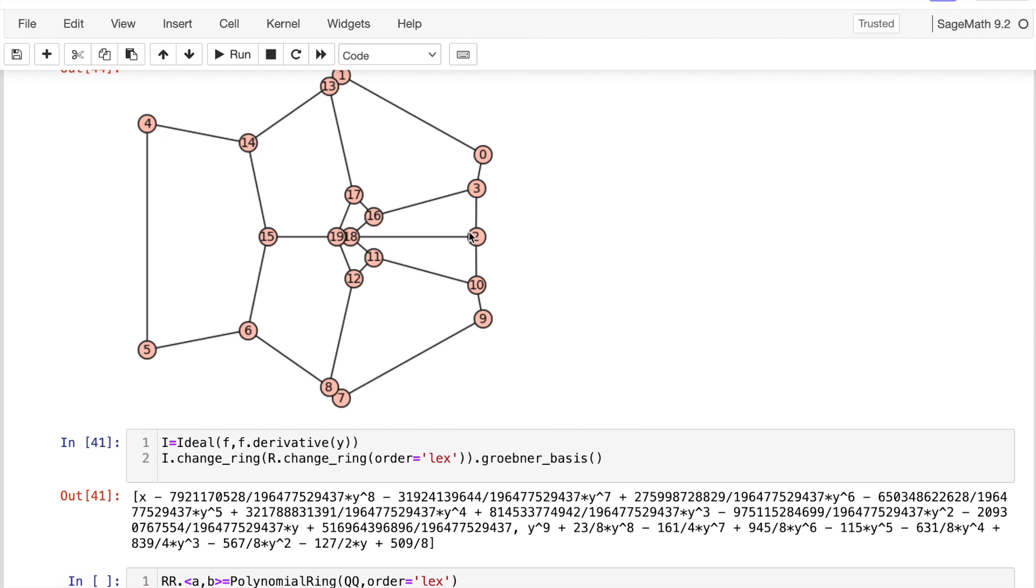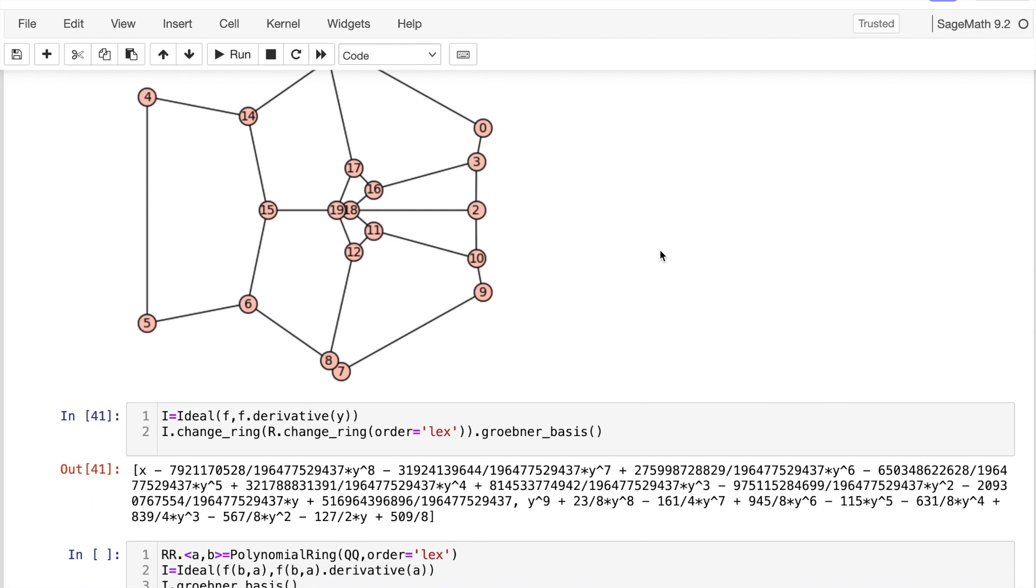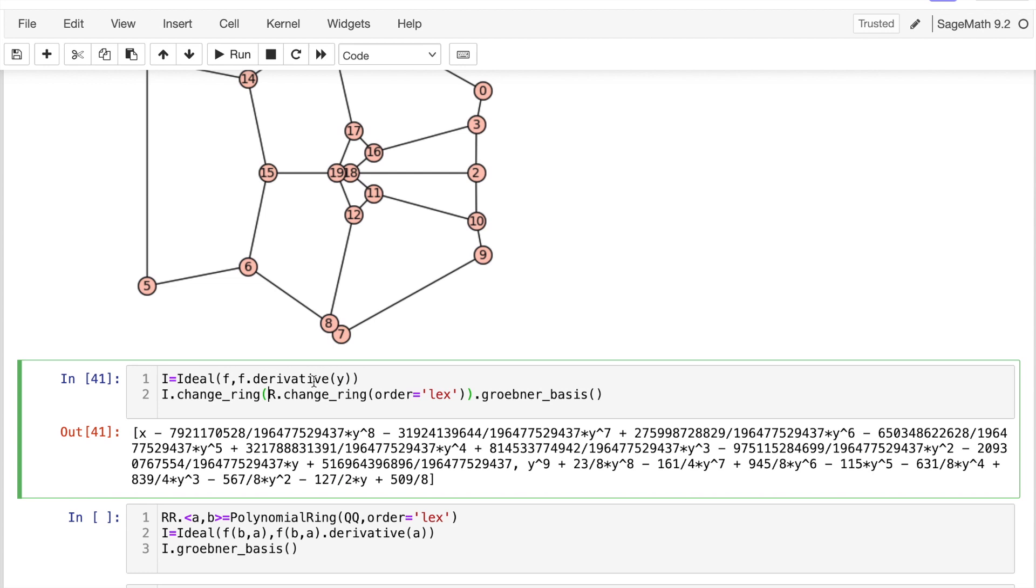What I want to show you here is that we indeed have nine ramification points. So that we can check with what we have done. For example, I construct this ideal with f and the derivative of f with respect to y. I change to lex ordering. And here, the lexicographic Gröbner basis really does have this univariate polynomial in y. That's of degree 9, so I have nine ramification points.